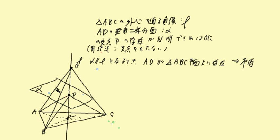そうすると、必ず直線LとαはLとの交点ができます。交点Pの存在が証明できれば、直線L上の点であるという時点でABCからの距離が同じでした。さらに垂直二等分面α上の点であれば、2点OとAからの距離が等しい。つまり、この両方を満たす交点Pは、4点OABCからの距離が等しいということが証明できます。